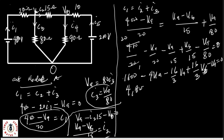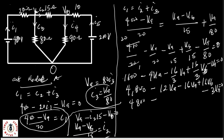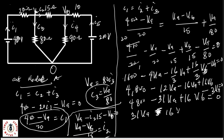Multiplying through by 3 gives 4,800 minus 12VA minus 16VA plus 16VB minus 3VA equals 0. Collecting VA terms: minus 12 minus 16 minus 3 equals minus 31VA. So rearranging, 31VA minus 16VB equals 4,800. Let's call this Equation 1, from node 1.